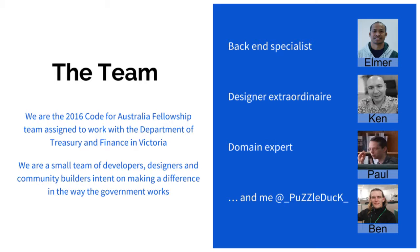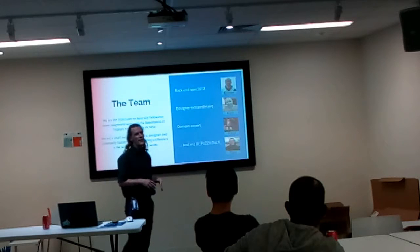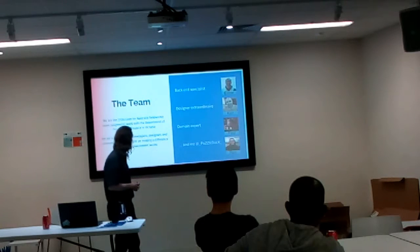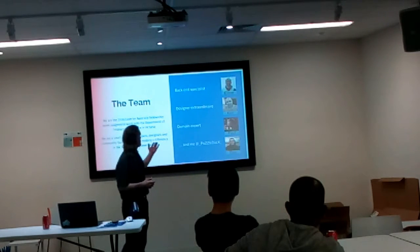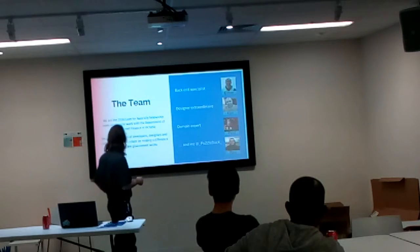A little bit about us — there's three of us plus department personnel on our team. We've got Elmer, who's our coding backend specialist; Ken, who's our designer; Pong, who's from the department, joining us as a domain expert and giving us advice. And I'm pretty sure I've got a job too, but it didn't fit on the slide.